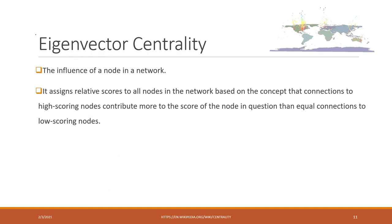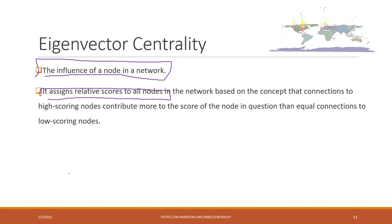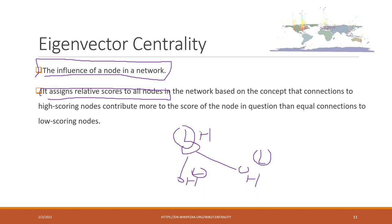There is another very interesting centrality measure called eigenvector centrality. Eigenvector centrality is a measure of the influence of a node in the network. It assigns relative scores to all the nodes, and your score depends on your neighbors. If all your neighbors have high scores, you will have a high score. If all your neighbors have low scores, you will have a low score. That is the idea of eigenvector centrality.